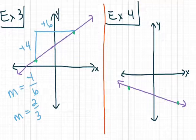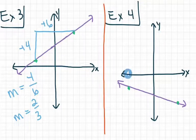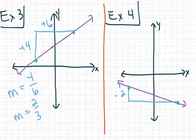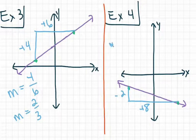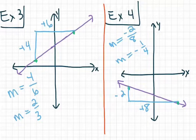For our last review example, we have points at negative 4 comma negative 2 and 4 comma negative 4. We start at the point that's further on the left and ask ourselves, do we rise up or rise down? In this case, we rise down. I'm going to go down 2 units until I'm level with the other point — so negative 2. Then I go to the right a total of plus 8. So m is equal to negative 2 over 8, which simplifies to m equals negative 1 fourth. That was a little bit of review of how to find slope from a graph.